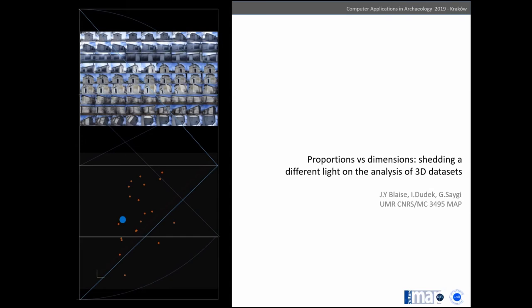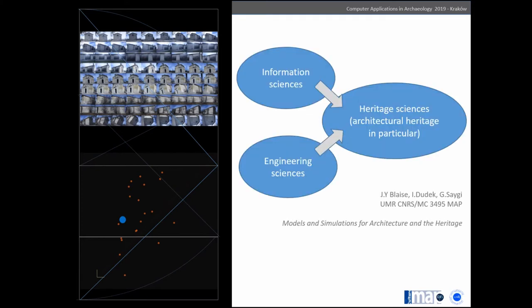The experiment I'm presenting today was conducted with my colleague, another postdoctoral student, in a research unit called MAP. MAP takes information sciences and engineering sciences and applies them to heritage sciences, particularly to the architecture of heritage.